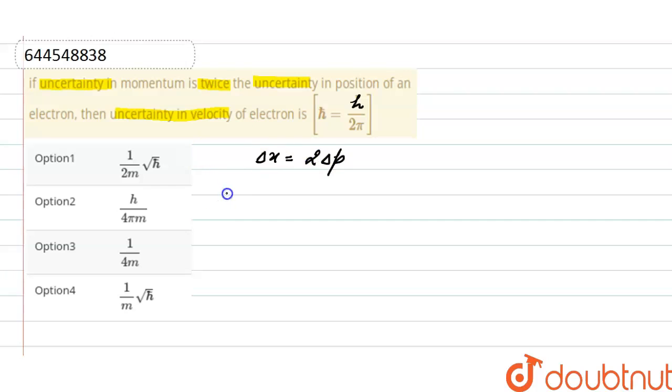to Heisenberg's uncertainty principle, we can find out by using this formula. And here we can write delta x as uncertainty in position as 2 into delta p, and delta p is equals to h divided by 4 pi.